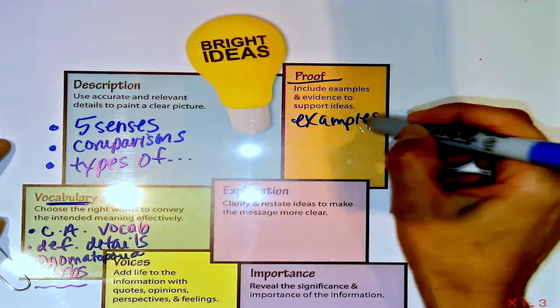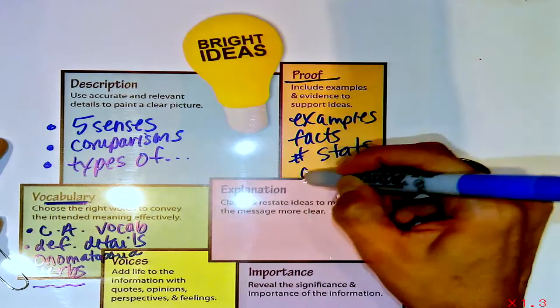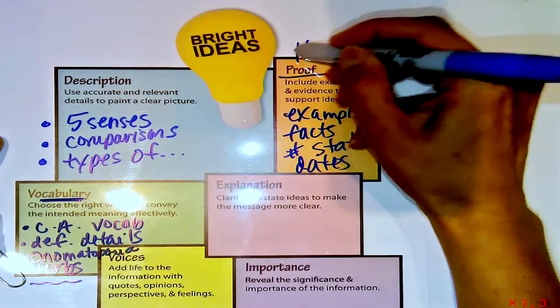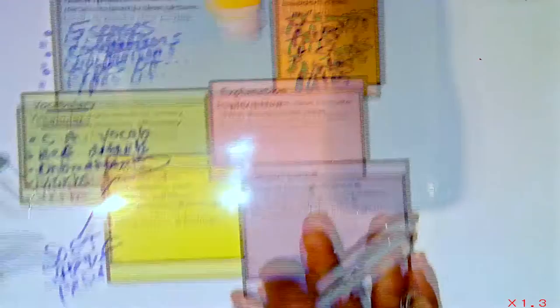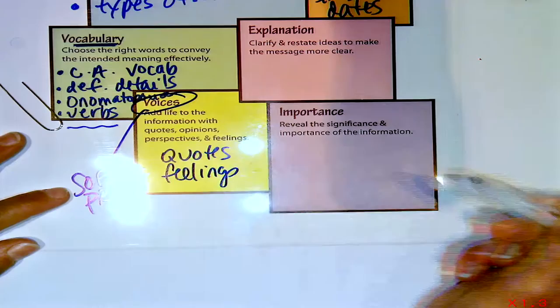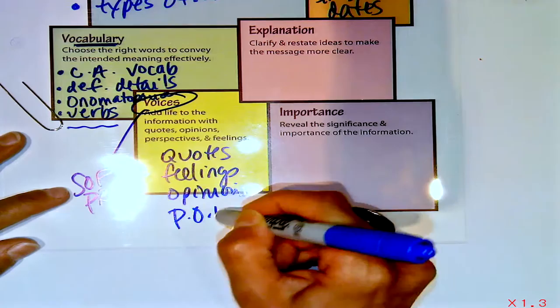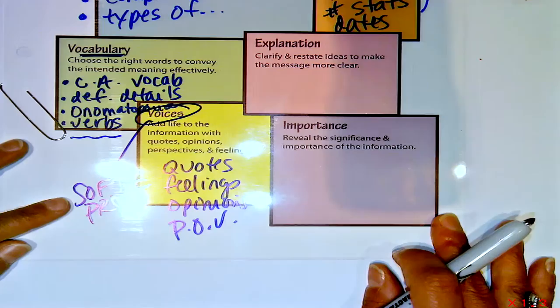Kids could add proof. What do you mean by proof? Examples are proof. Facts, statistics, numbers, dates — all of that is proof. I call that hard proof because I think there's also soft proof. I call that voices. Hard proof you can't argue with: facts, statistics, dates. Soft proof might be things like quotes, feelings, opinions, different perspectives or point of view. To me, that's soft proof.